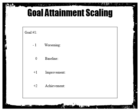Goal Attainment Scaling is usually a four-point scale in which the client identifies a goal in their own words, and then identifies what their baseline is — how they are currently doing towards that goal — what it would look like to achieve that goal (the plus two), what small steps they could take towards achievement (improvement), and also what it would look like if they took a step backwards (worsening). The client gives responses for what this would look like in their lives, and they have defined their own scale of quantifying progress towards their goal.